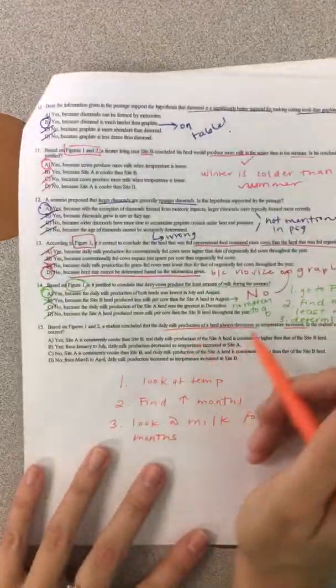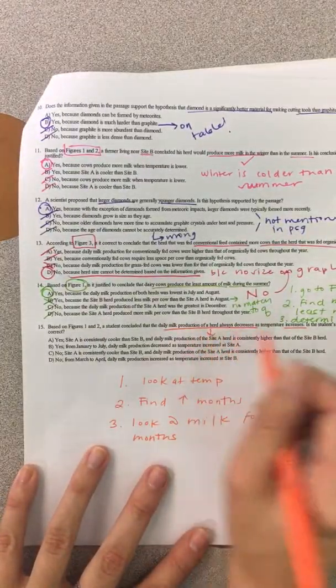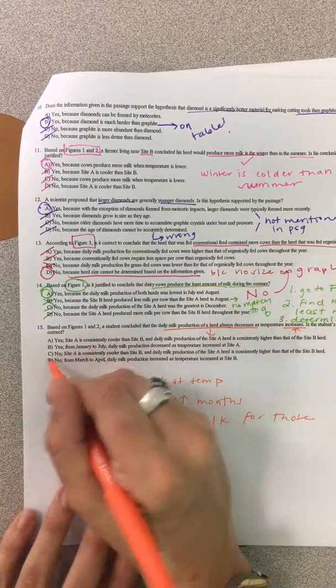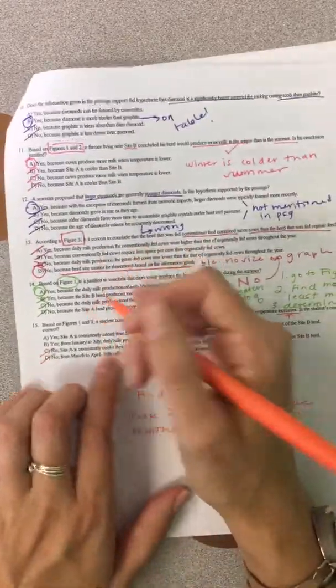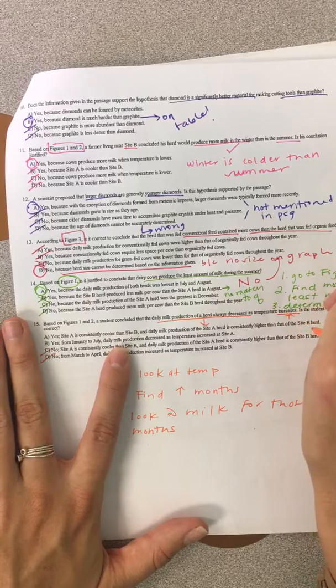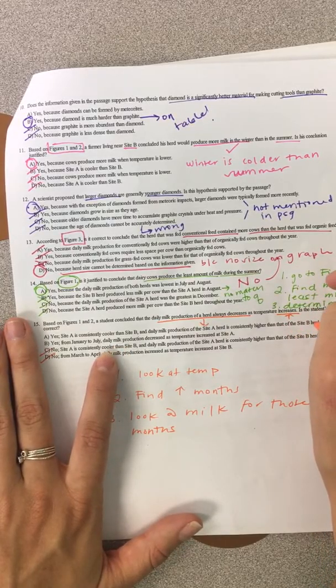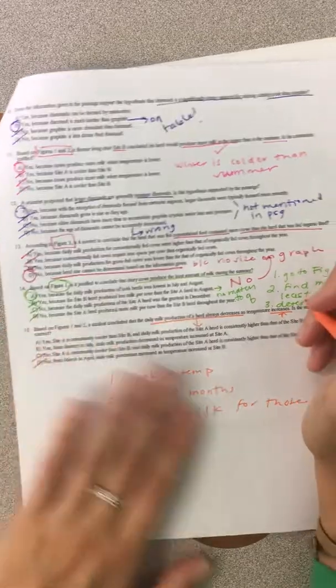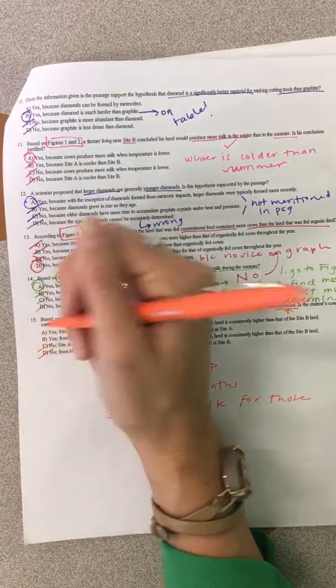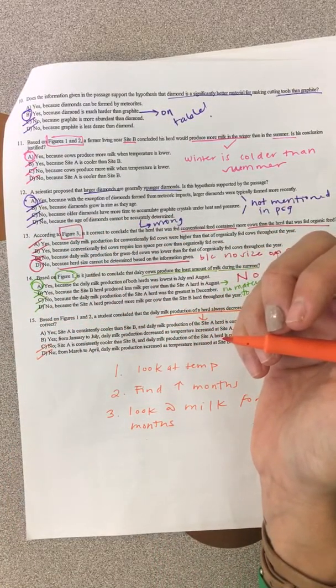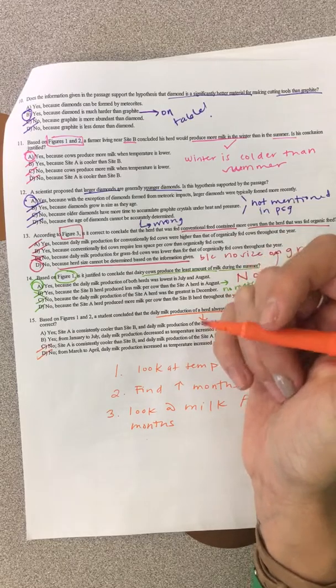Okay, now let's see if that's right or not. Milk decrease as temperature increase. So, that's a yes question because we saw that. So, we can cross off C and D. Now, yes, site A is consistently cooler than site B. Daily milk production of site. That, again, compares the sites. So, I'm going to cross off A.